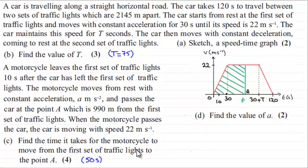Just to point out, if you watched the previous video, you'd have seen that in part C, we worked out that the motorcyclist, which started 10 seconds after the car left the traffic lights, took 50 seconds to get to this point A. So just bear that in mind when it comes to working out the value of A. You might find it useful.